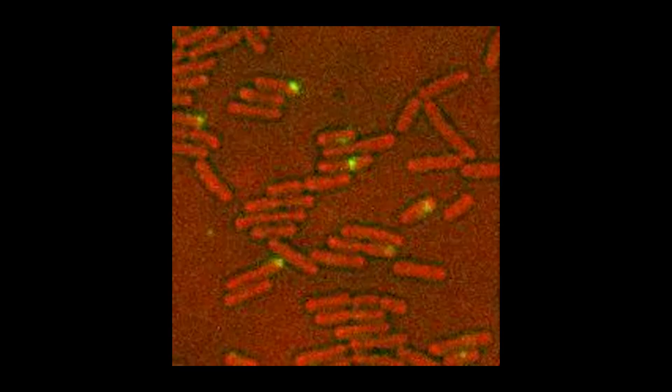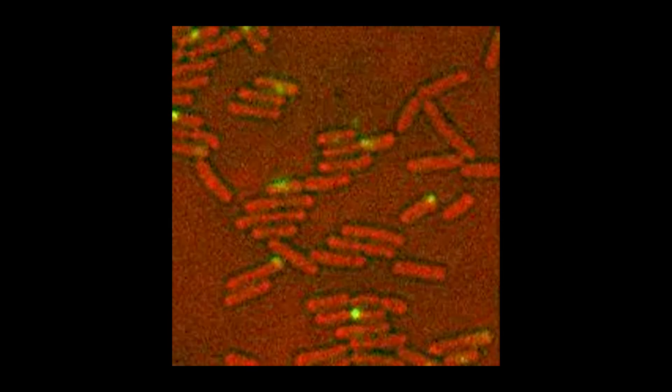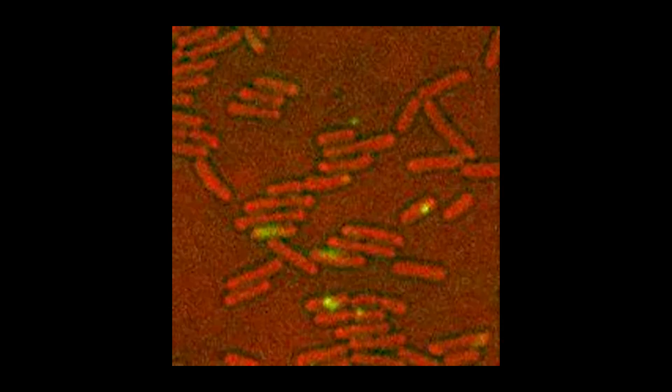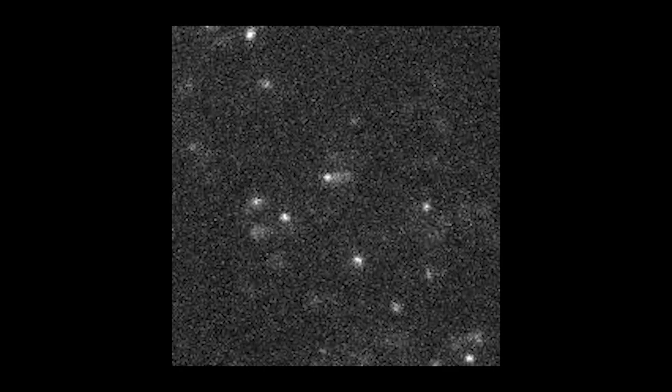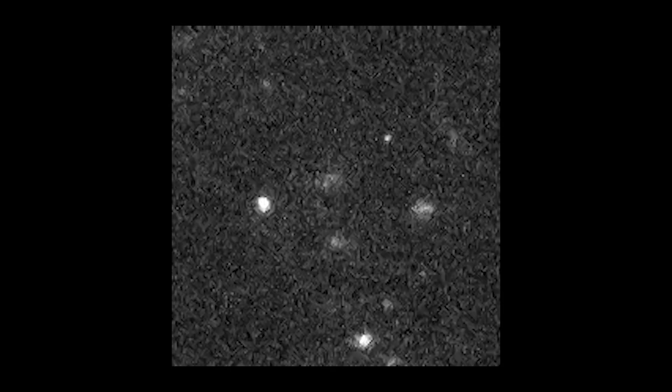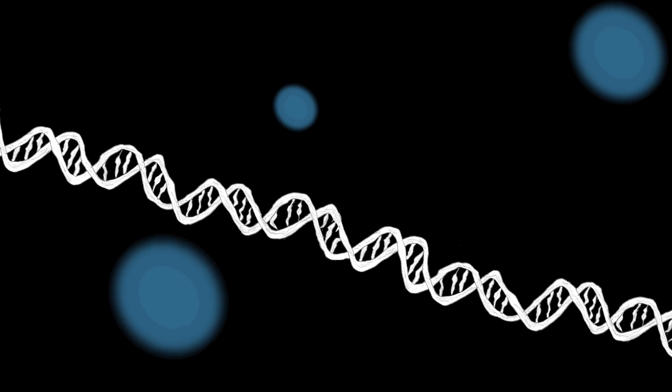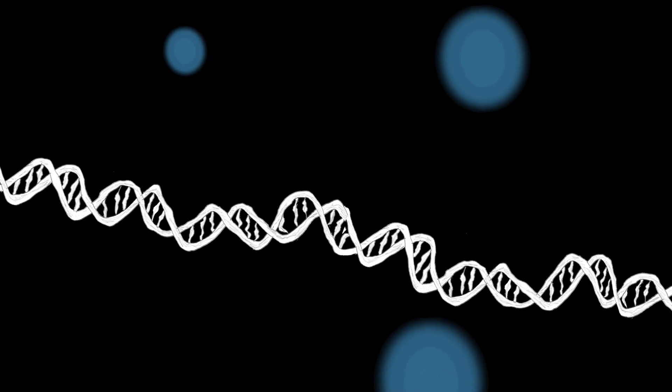We look at these particular enzymes that carry out TLS, and usually we'll tag them with some kind of fluorescent molecule that we can see in the microscope. Then we'll watch as these enzymes move around, and from how they move we'll try to infer something about what they're doing, and we'll see how that changes if we treat the cell with DNA damaging agents.